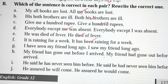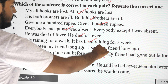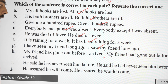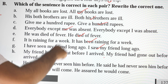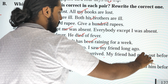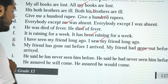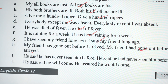I have seen my friends long time ago, or I saw my friends long ago? I saw my friend long ago. My friend has gone out before I arrived, or my friend had gone out before I arrived? My friend had gone out — past in the past, that's why had gone out.